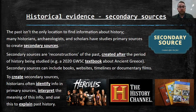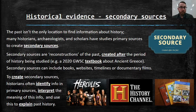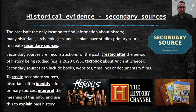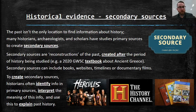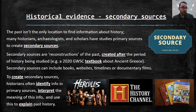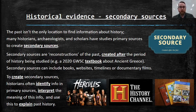The past isn't the only location to find information about history. Many historians, archaeologists, scholars, and professors have studied primary sources to create secondary sources. Secondary sources are reconstructions of the past — sources about history that are created after the history being studied. For example, a GWC textbook created in 2020 talks about ancient Greece, but was it made in ancient Greece? No. It still tells you information about ancient Greece, so it's still helpful, but it's not a primary source — it's a secondary source, created after the fact.